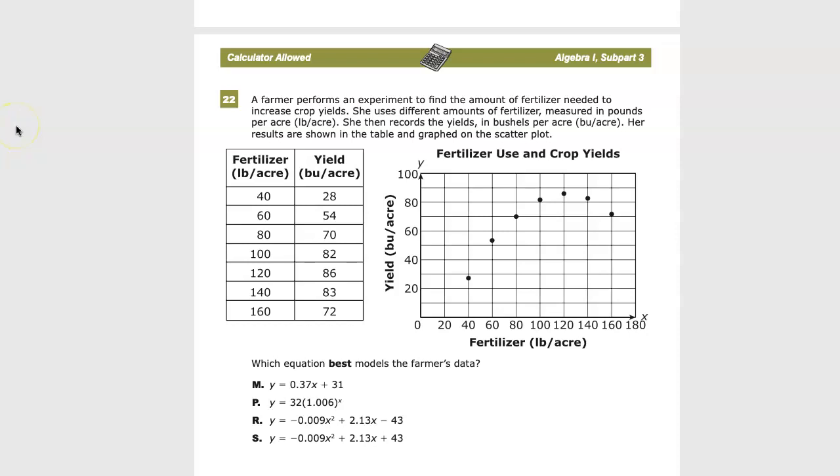The Algebra 1 Math Practice Test for TN Ready, question number, well at least on this version, 22. A farmer performs an experiment to find the amount of fertilizer needed to increase crop yields. She uses different amounts of fertilizer measured in pounds per acre. She then records the yields in bushels per acre. Her results are shown in the table and graphed on the scatter plot.